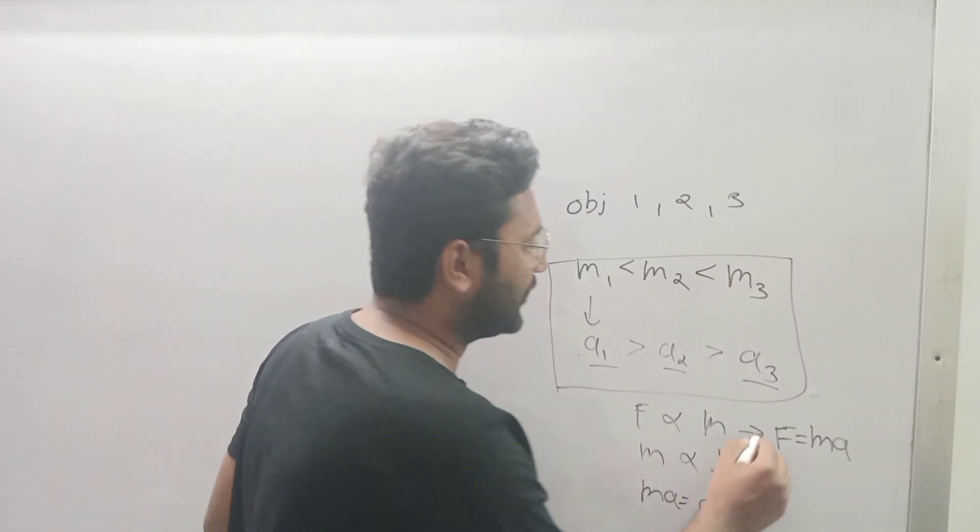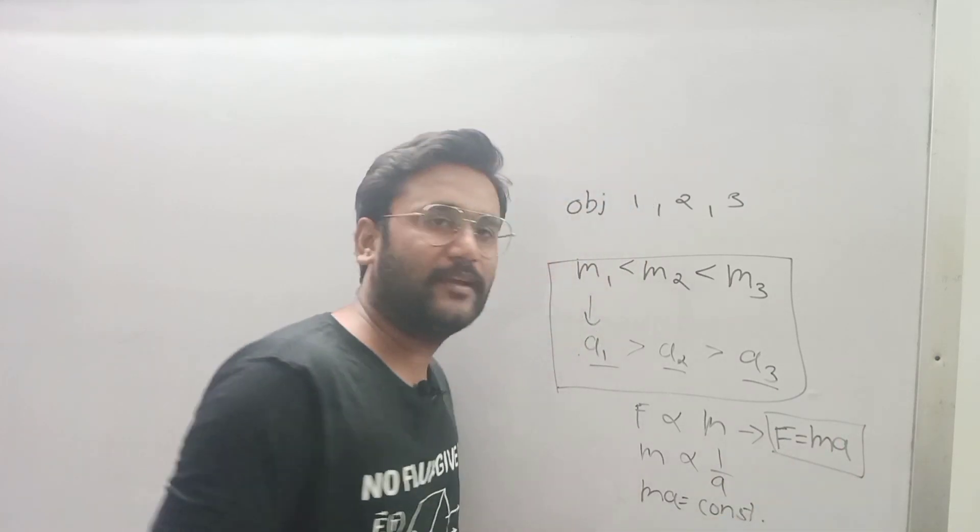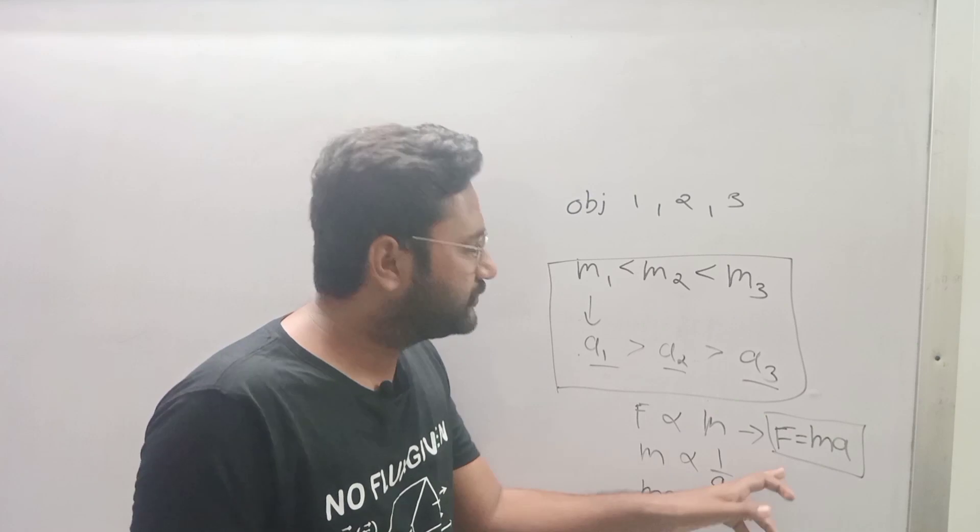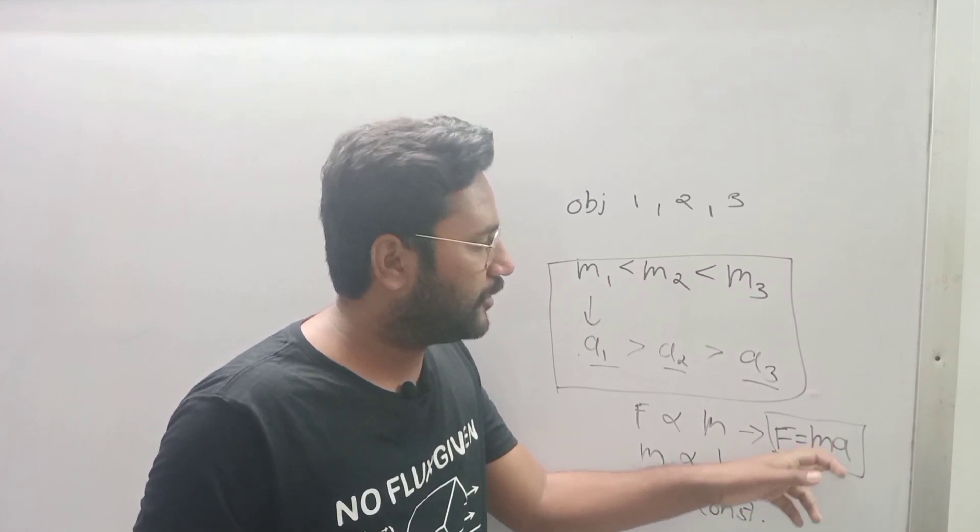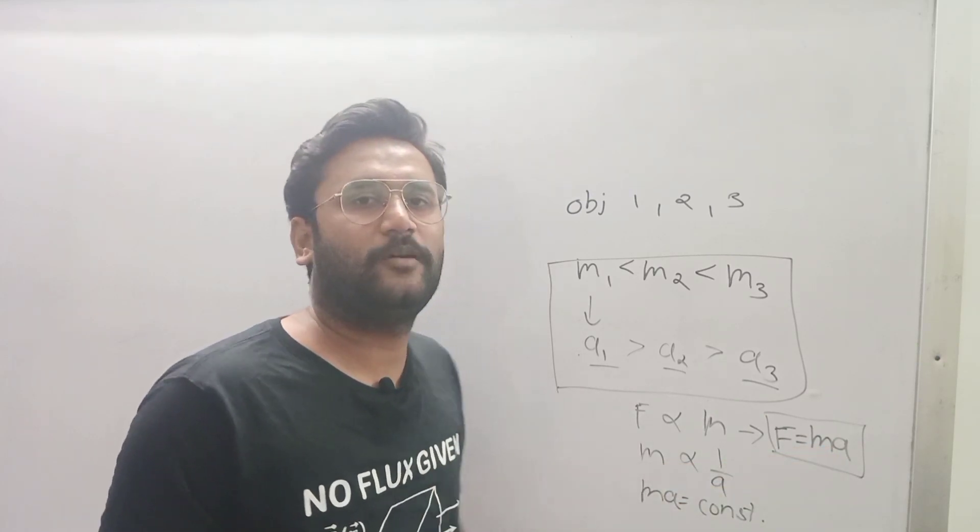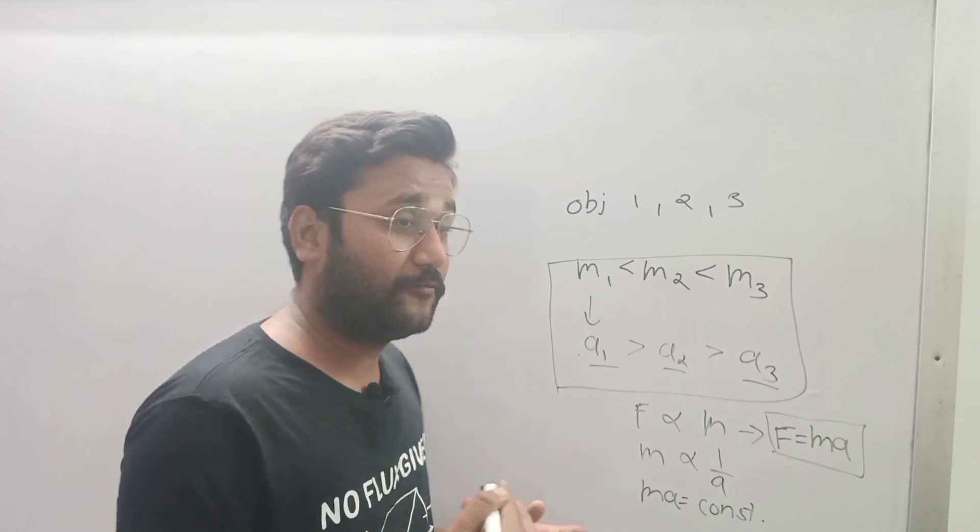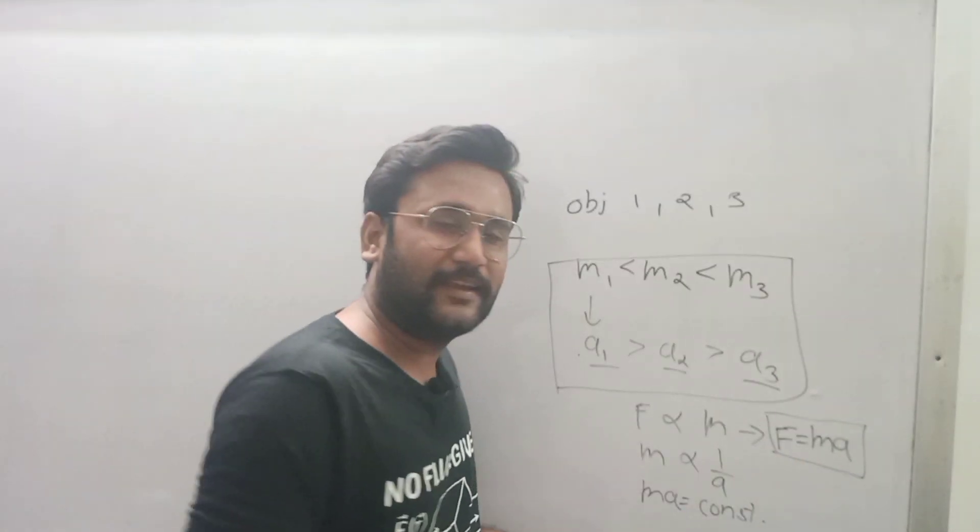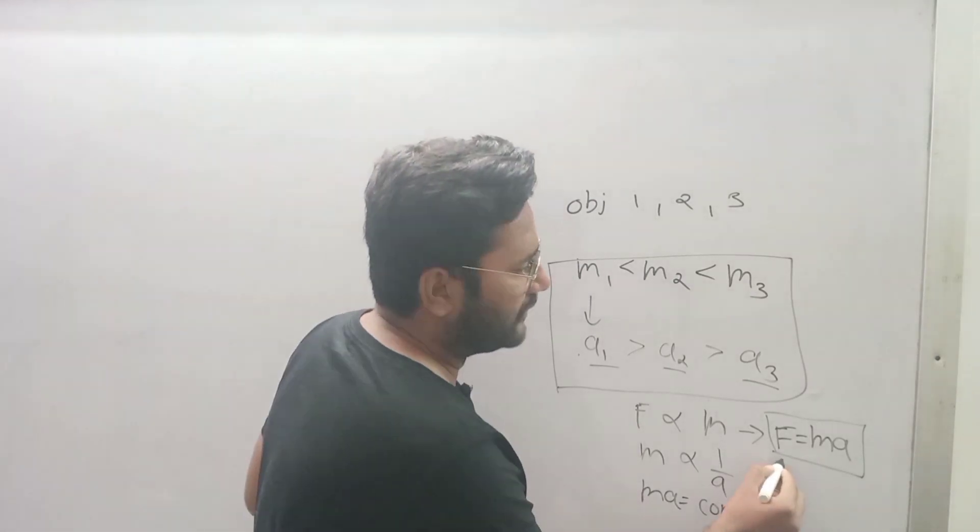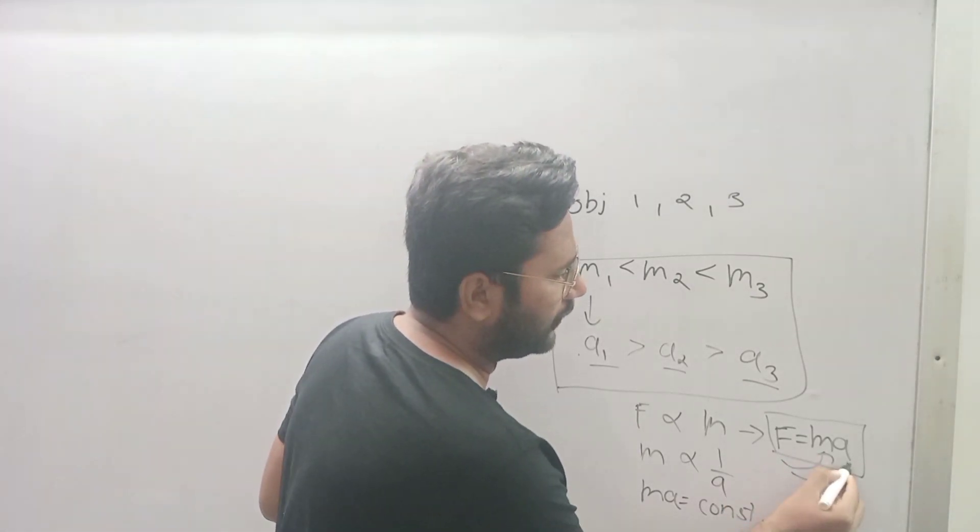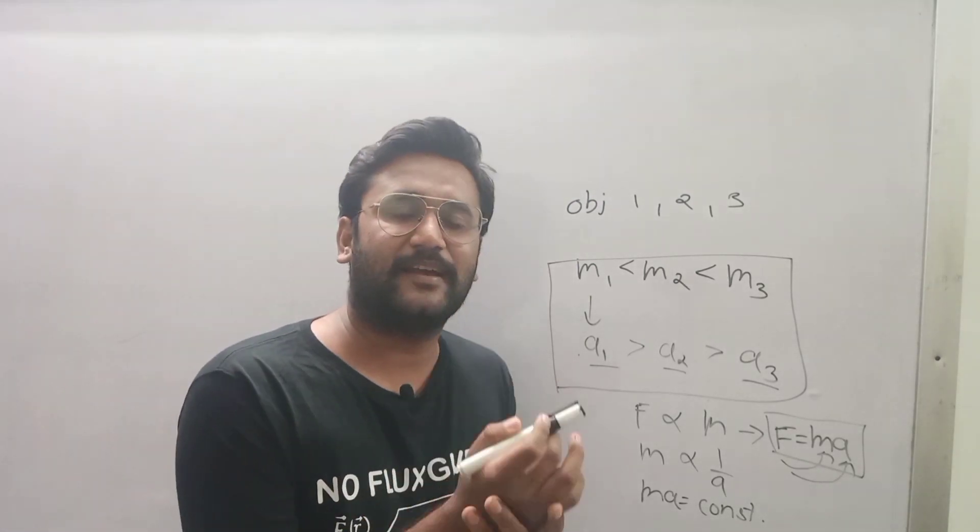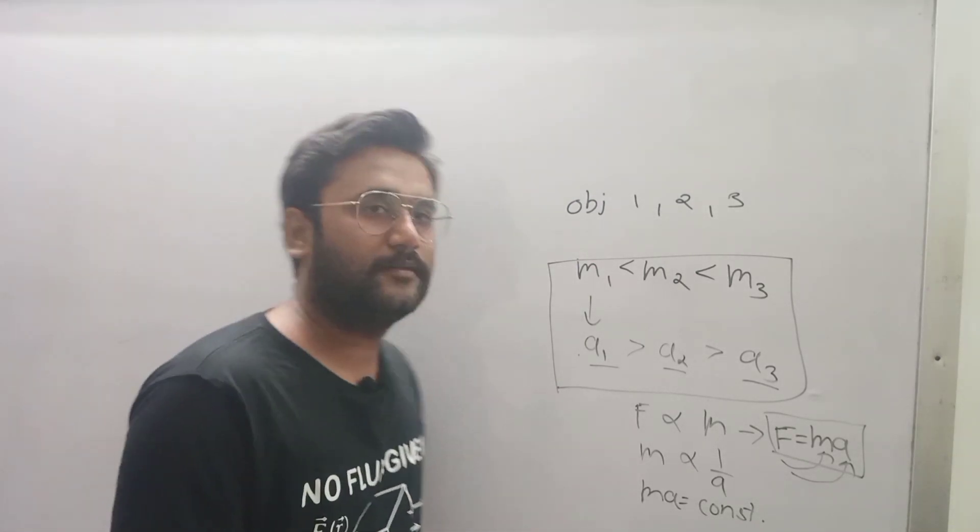Newton's second law of motion. So how can we now define this? Net force acting on the object depends on the mass of object and acceleration of object. Again, net force acting on the object depends on the mass of object and acceleration of the object. So this was Newton's second law of motion. Now you got it.